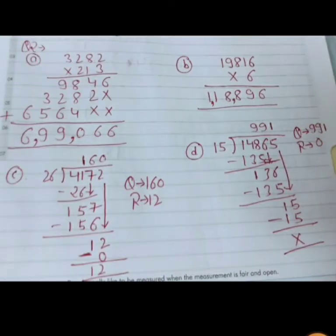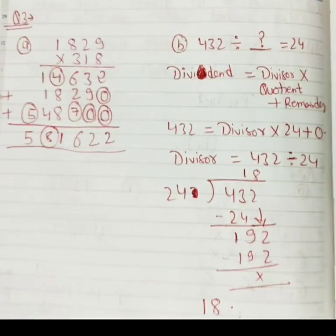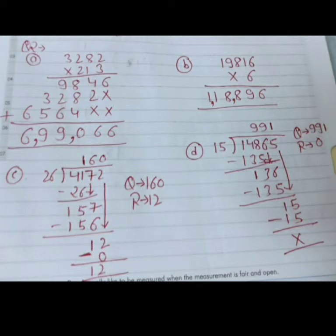Now question number 2, 3202 ko 213 se multiply karenge. First 3 se karenge, 3206. Phir 3204, 2 carry ho, 3206, 7, 8, 3309 ho jaega. Phir 1 se karenge, 3202, 2 2 za 4, 2 2 za 16, 2 2 za 4, plus 1, 5, 2 3 za 6. Add karenge, 6, 4, plus 2, 6, 8, plus 8, 16, plus 4, 20, 0, 2 carry ho, 9 plus 2, 11, 11 plus 6, 17, plus 2, 19, 1 carry, 5 plus 3, 8, plus 1, 9, and 6.